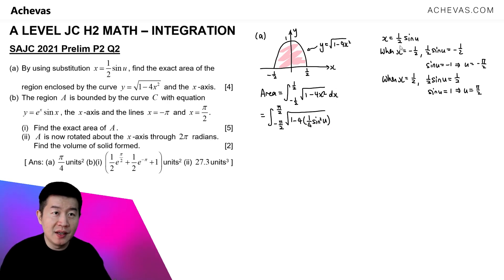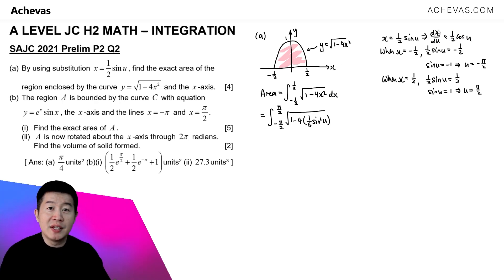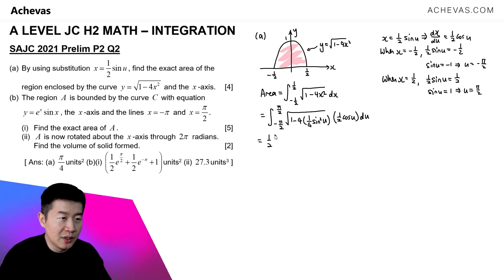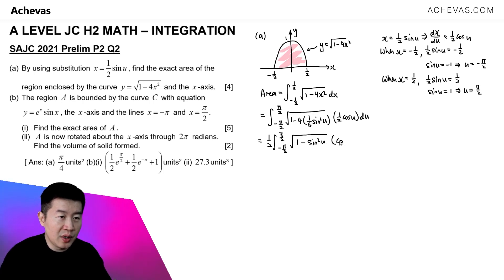We also need to replace dx. To find dx/du: dx/du = ½cos(u), so dx is replaced by ½cos(u) du. We bring the ½ outside the integration notation to simplify. So we have ½ times the integral from -π/2 to π/2 of √(1 - sin²(u)) times cos(u). Now, 1 - sin²(u) = cos²(u).